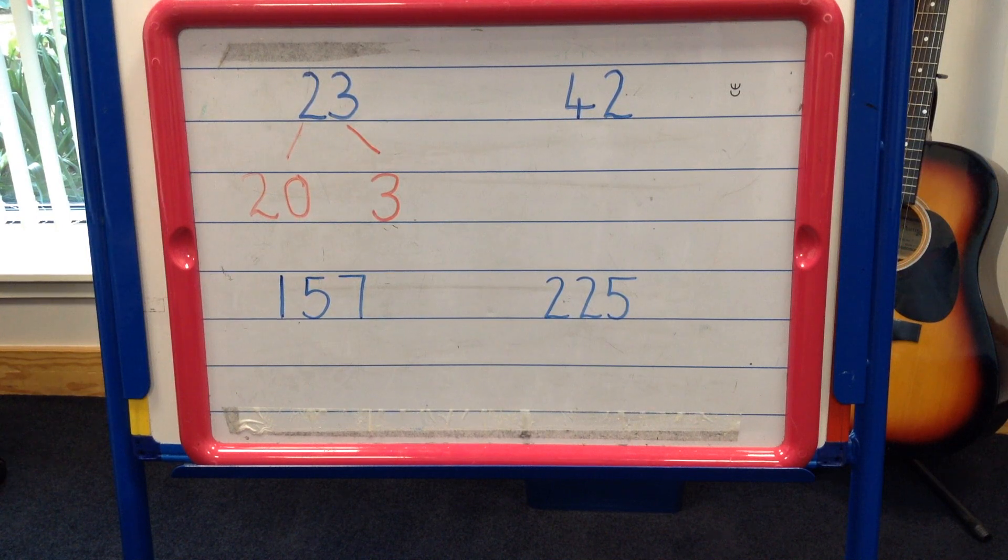Take the number 42. If we partition this number, it becomes 4 tens and 2 ones.